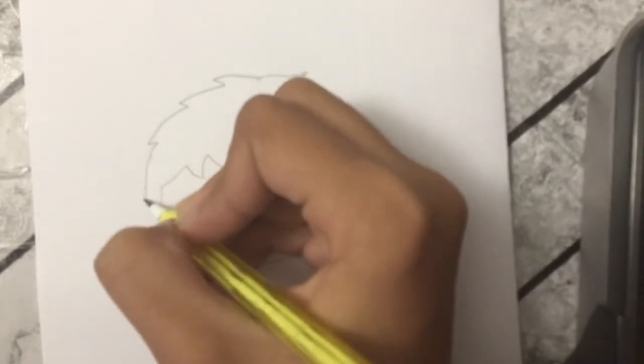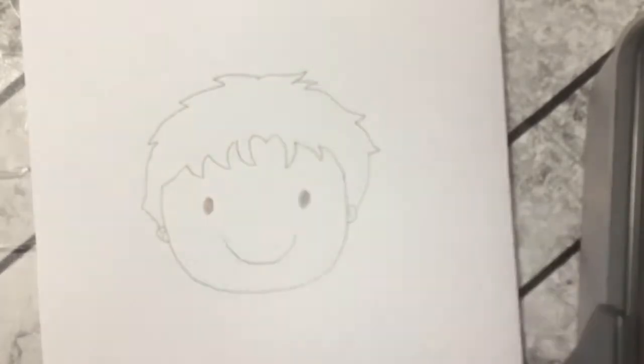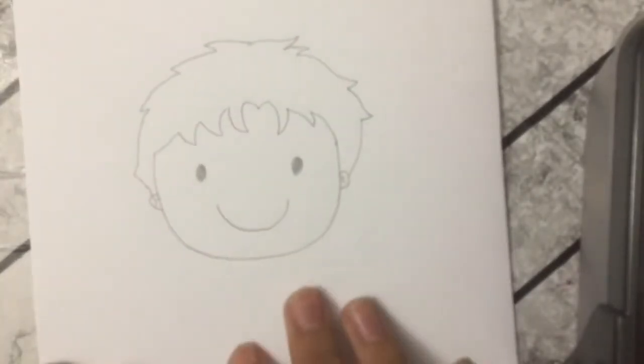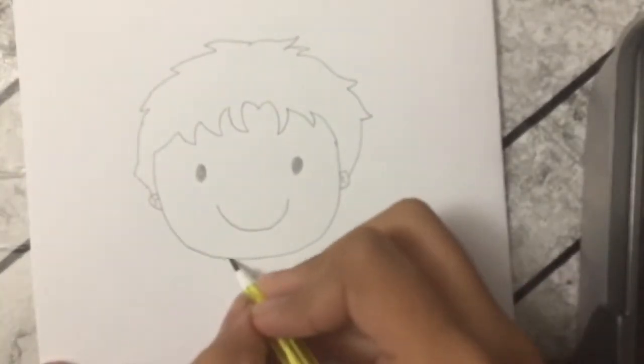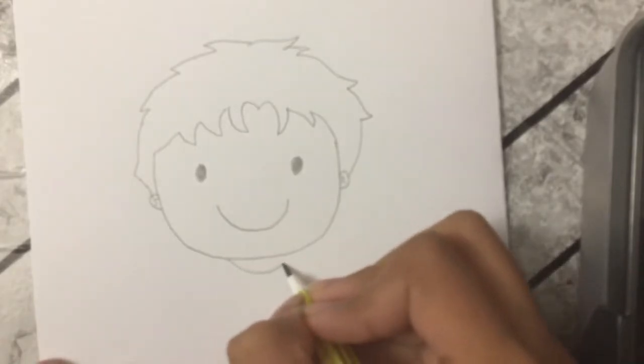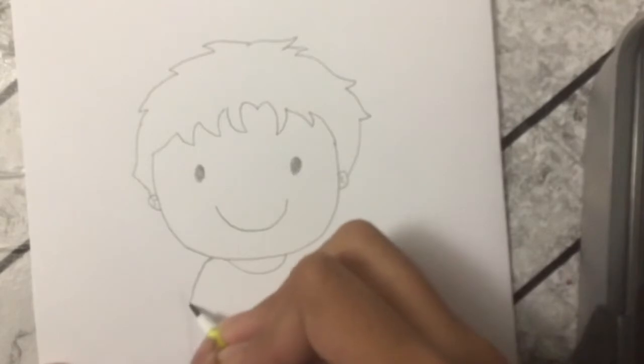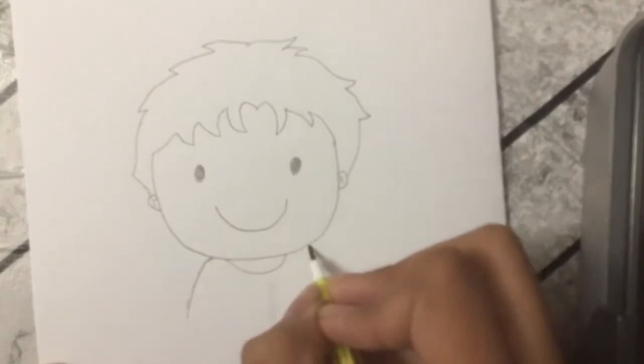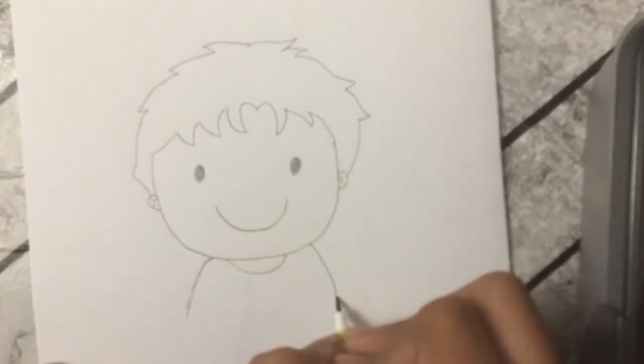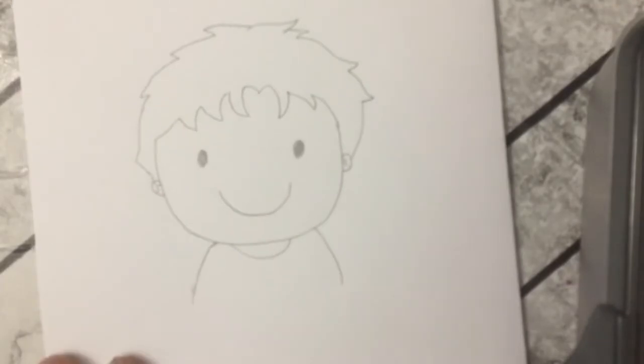Then just go back in like that. And next I'm gonna draw his shirt, so I'm just gonna draw a curve like this, then I'm gonna draw one and another one from here. Then his shirt says camp half blood on it, so I'm gonna write camp half blood.